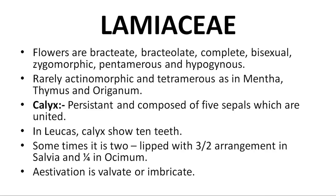Flowers are bractiate and bracteolate. Complete — all four floral organs (sepals, petals, androecium, and gynoecium) are present. Bisexual — both reproductive organs are present. Zygomorphic — only one plane divides the flower into two equal halves. Pentamerous — five petals present. Hypogynous — superior ovary; floral parts arise from below the ovary. Rarely actinomorphic and tetramerous — seen in Mentha, Thymus, and Origanum.